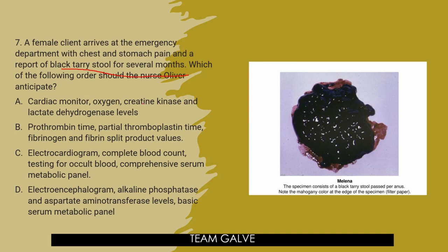Is it B, prothrombin time (PT), PTT/INR, fibrinogen, and fibrin split product values — the coagulation profile? Is it C, electrocardiogram, complete blood count, testing for occult blood, and comprehensive serum metabolic panel? Or D, electroencephalogram, alkaline phosphatase, and aspartate aminotransferase levels with a basic serum metabolic panel?